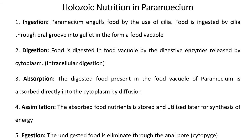In Paramecium, holozoic type of nutrition takes place. In holozoic nutrition, digestion occurs in five stages: ingestion, digestion, absorption, assimilation, and egestion. Intake of food is called ingestion. Conversion of complex food into simple form is called digestion. Absorption of essential nutrients into the body is called absorption. The absorbed nutrients are stored in the form of food vacuoles for generating energy, called assimilation.